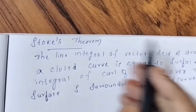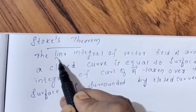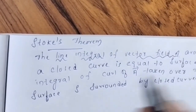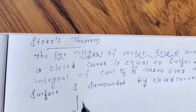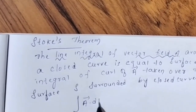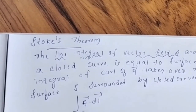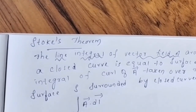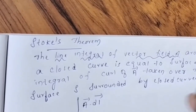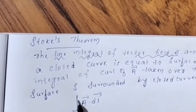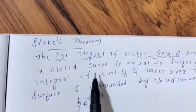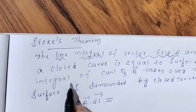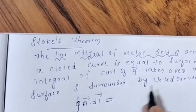Stokes theorem says that the line integral of vector field A — written as integral A dot dL — around a closed curve is equal to the surface integral of curl A.